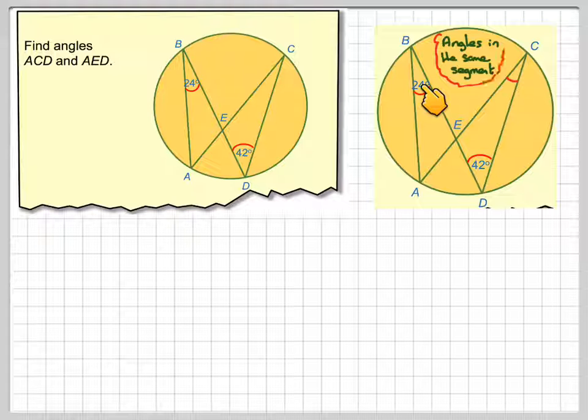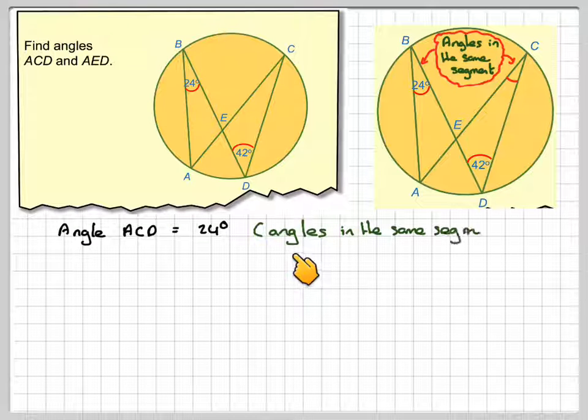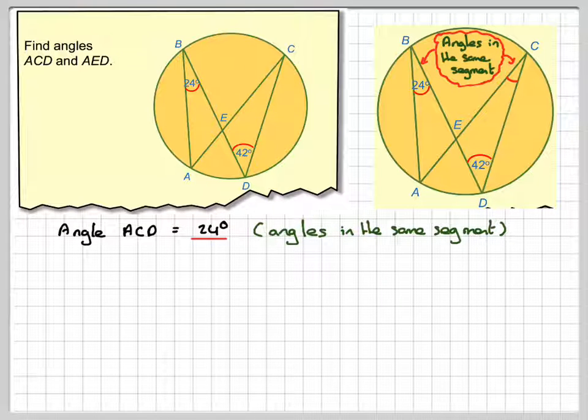What we know here is that these two angles are in the same segment. If you were to draw a line here, you can see they're in the same segment. So we can say that angle ACD is equal to 24 degrees, and the reason being angles in the same segment.